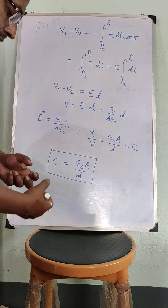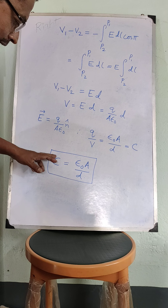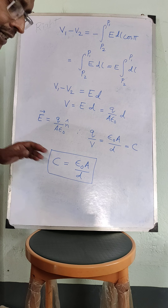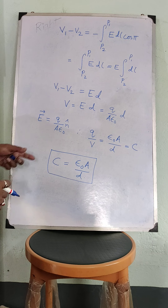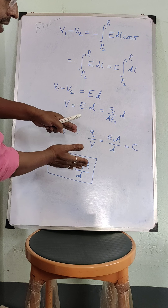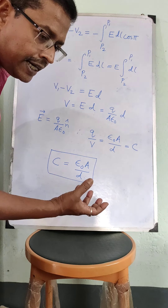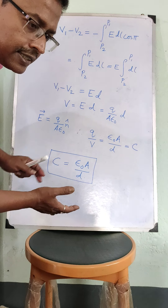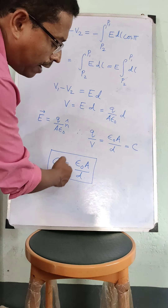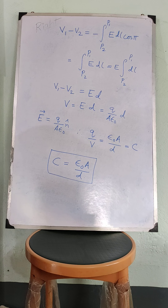If the separation distance between the two plates increases, capacitance decreases. Why? Because if you increase the distance between the two plates, the electrostatic coupling between the two conductors decreases, and so capacitance also decreases. This is for the parallel plate capacitor.